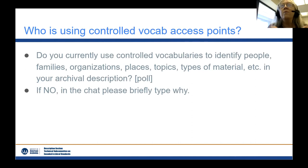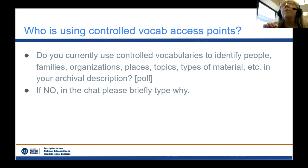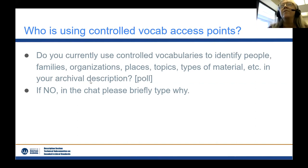First we're going to do a quick snapshot of where all of you are right now. Cory's going to put up a poll: do you currently use controlled vocabularies to identify people, families, organizations, places, etc. in your archival description? Just yes or no. And if you say no, we would love it if you would drop into the chat and briefly say why.